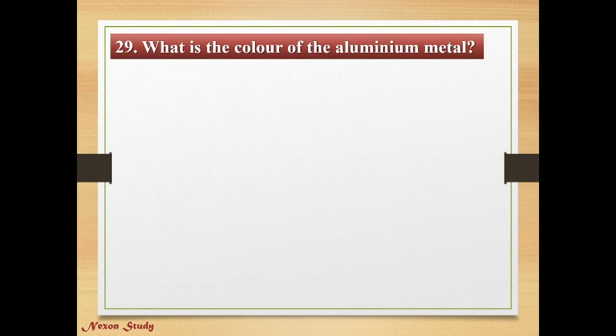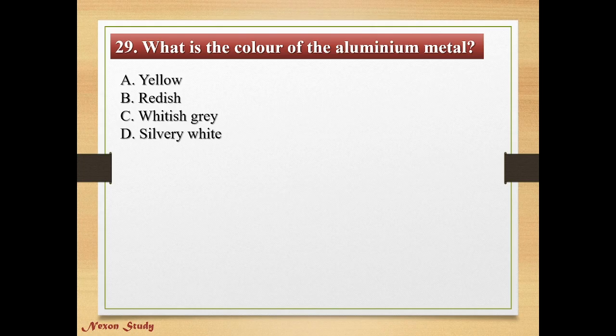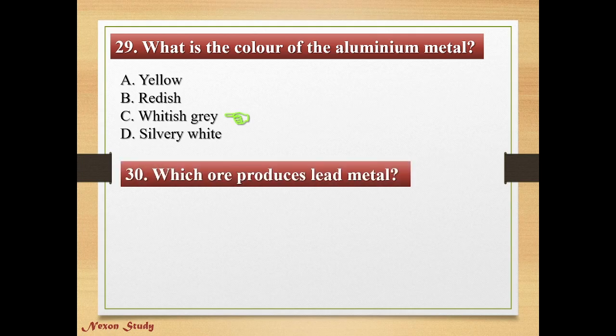Question: What is the color of aluminium metal? Options: yellow, red, white, silvery white. Correct answer is silvery white. Question: Which ore produces lead metal? Options: pyrite, bauxite, malachite, galena. Correct answer is galena.